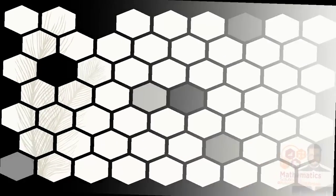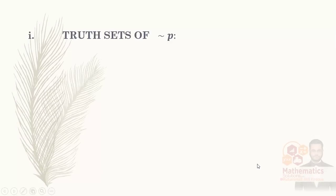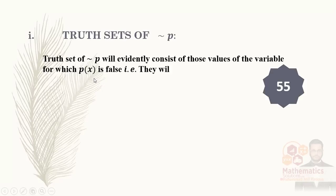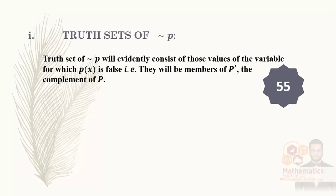Next, we will see the two set of negation of P. We covered this in Exercise 2.4. The negation of P — what is its two set? On page 55 this information is available. The two set of negation of P will evidently consist of those values of the variable for which P(x) is false — they will be members of P-dash, the complement of P. Negation means we reverse: if true, we say false; if false, we say true. So if the complement of P is given, its true set is written as P-dash, which is called negation of P.